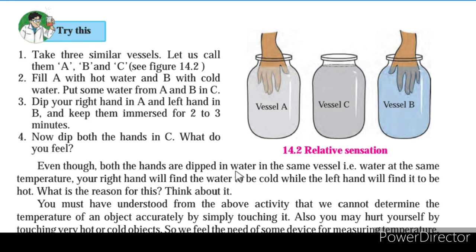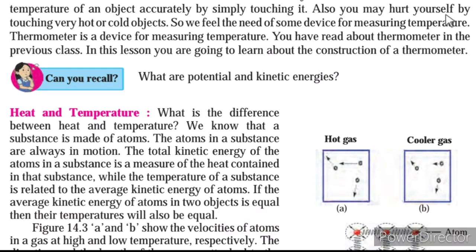Even though both hands are dipped in water at the same temperature in vessel C, the right hand will feel the water to be cold while the left hand will find it to be hot. You must understand from this activity that we cannot determine the temperature of an object accurately by simply touching it. Also, you may hurt yourself by touching very hot or cold objects. So we feel the need of some device for measuring temperature. A thermometer is a device for measuring temperature, and in this lesson you are going to learn about its construction.